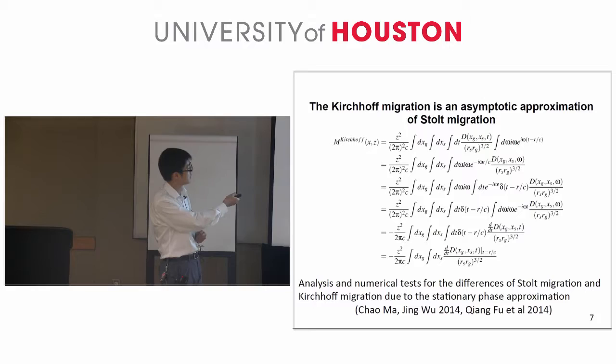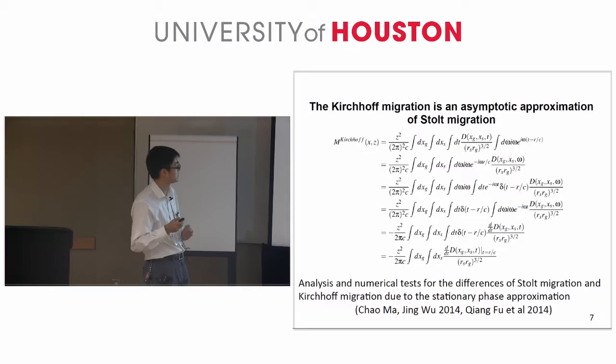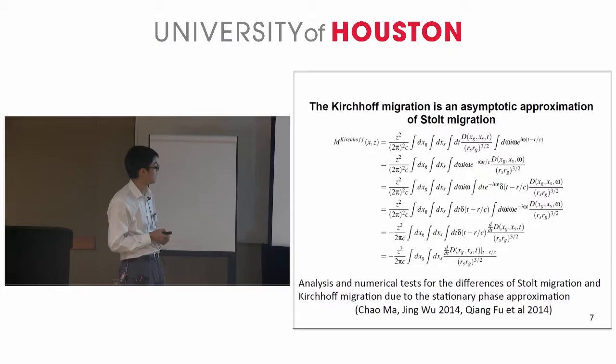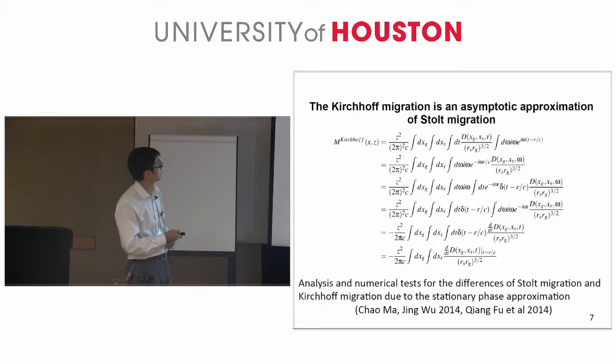The formula tells us it predicts a candidate on a travel ellipse. And because it is an asymptotic approximation of STOE migration, it loses the ability to predict a source and receiver experiment at depth. There are analyses and numerical tests for the differences of STOE migration and the Kirchhoff migration due to the stationary phase approximation in Chaoma, Jingwu, 2014, and Changfu et al.